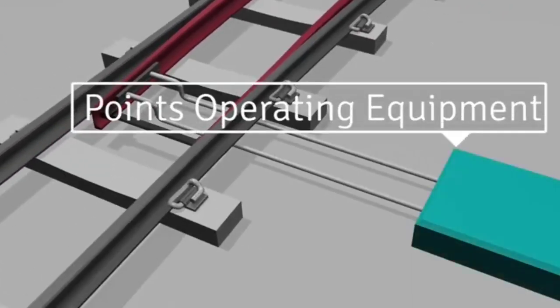Points operating machine, also known as a point switch machine or switch motor, is a device for operating railway turnouts, especially at a distance.